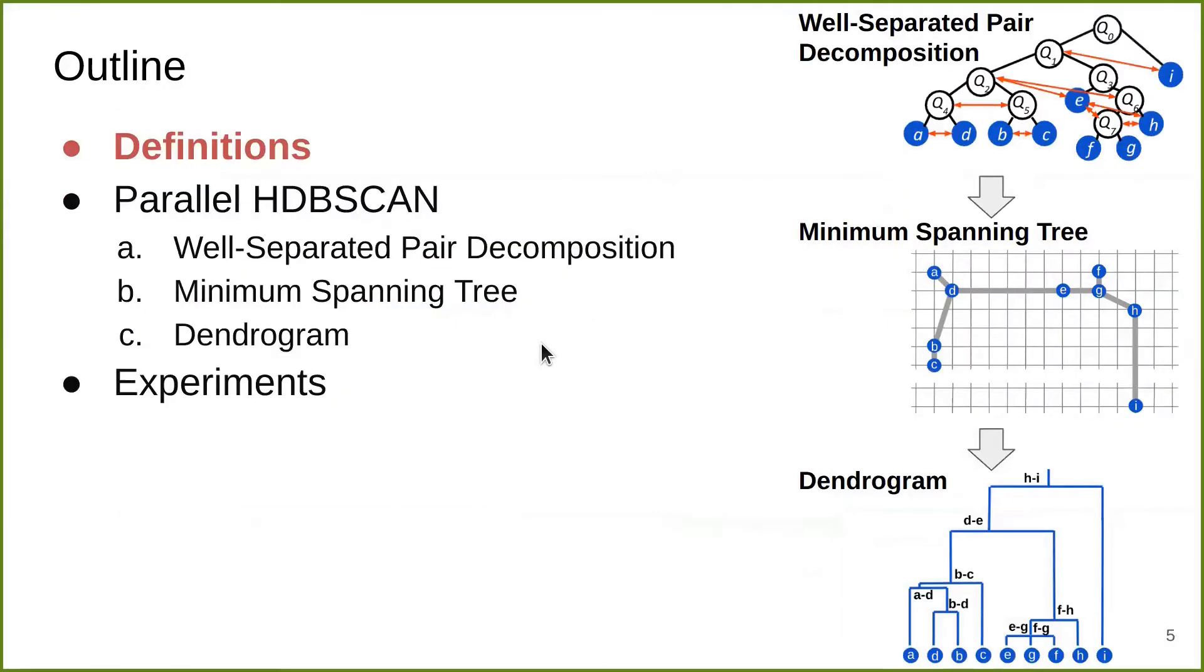This is the outline of my talk. First, I'm going to define the problem. Then I'm going to talk about parallel HDBSCAN algorithms, which mainly involve three parts: the well-separated pair decomposition, the minimum spanning tree, and the dendrogram. Lastly, I'm going to talk about experiments.